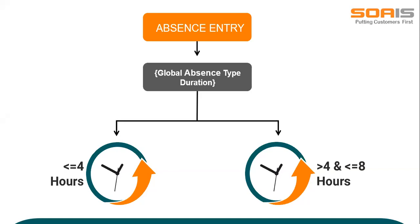Let's take an example. Suppose an employee requires a leave of 5 hours. What the employee would normally say is that he wants to take a half-day leave. But as the number of hours is greater than 4, the system will automatically mark it as one full day. And this automation is to the benefit of the organization.